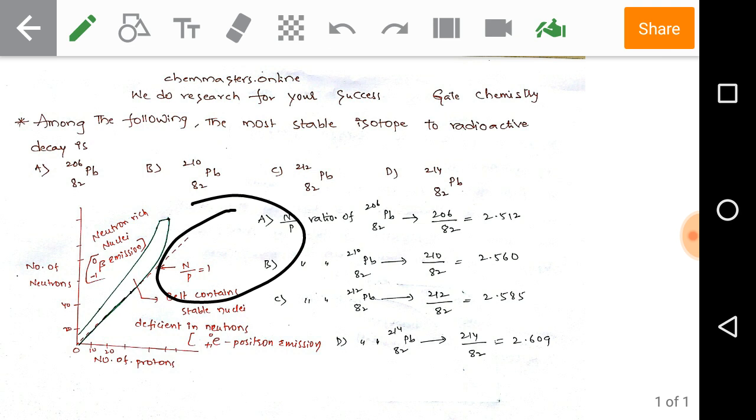To get stability, neutron-rich nuclei can emit beta particles. By emitting beta, they get a neutron to proton ratio nearer to one to achieve stability.